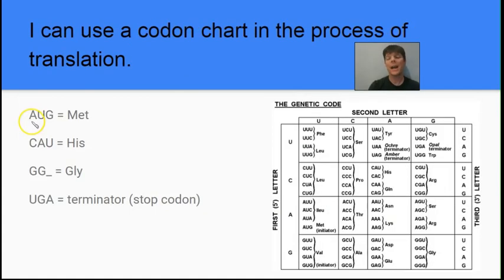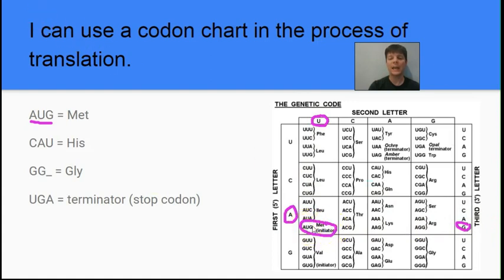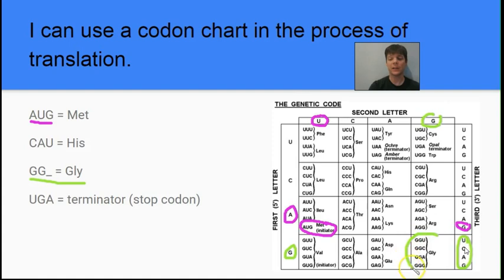Our next learning target is to understand how to use a codon chart in the process of translation. Let's look at an example of a codon: AUG. The first base is read on the side — A. We read the second one along the top — U. That puts us in the third row, first column. G is at the very bottom of that. So AUG tells the ribosome to insert the amino acid Met, or methionine, into a protein chain. The codon GG, no matter what the third base is, will introduce the amino acid glycine.